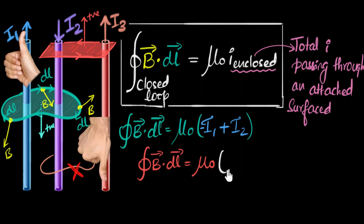So what I end up getting is plus I3. So I3 becomes my positive current. I2 becomes my negative current. So minus I2. And I1 is not in the picture because I1 is not penetrating that surface. And there you go. This is how we use Ampere's circuital law.